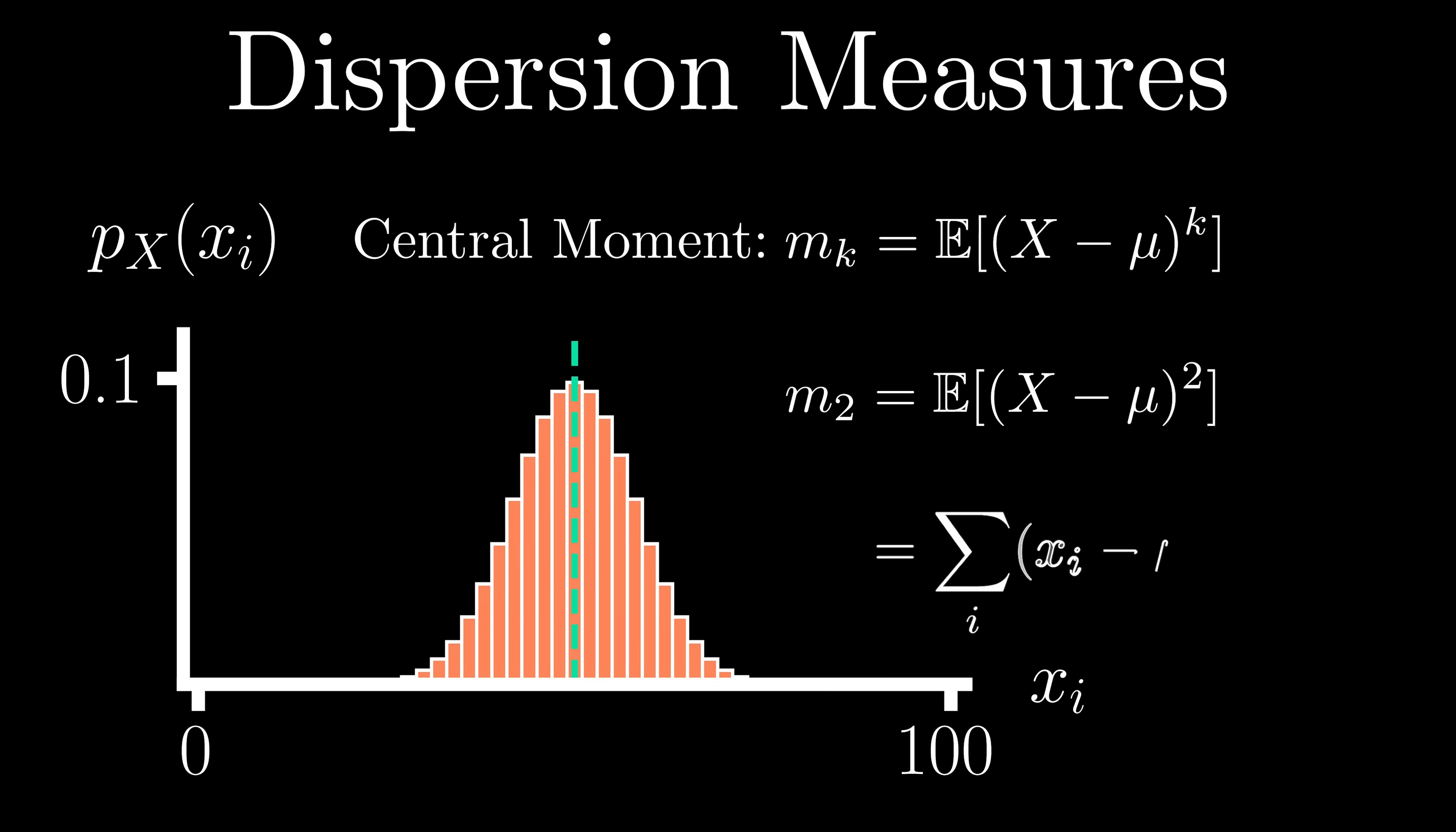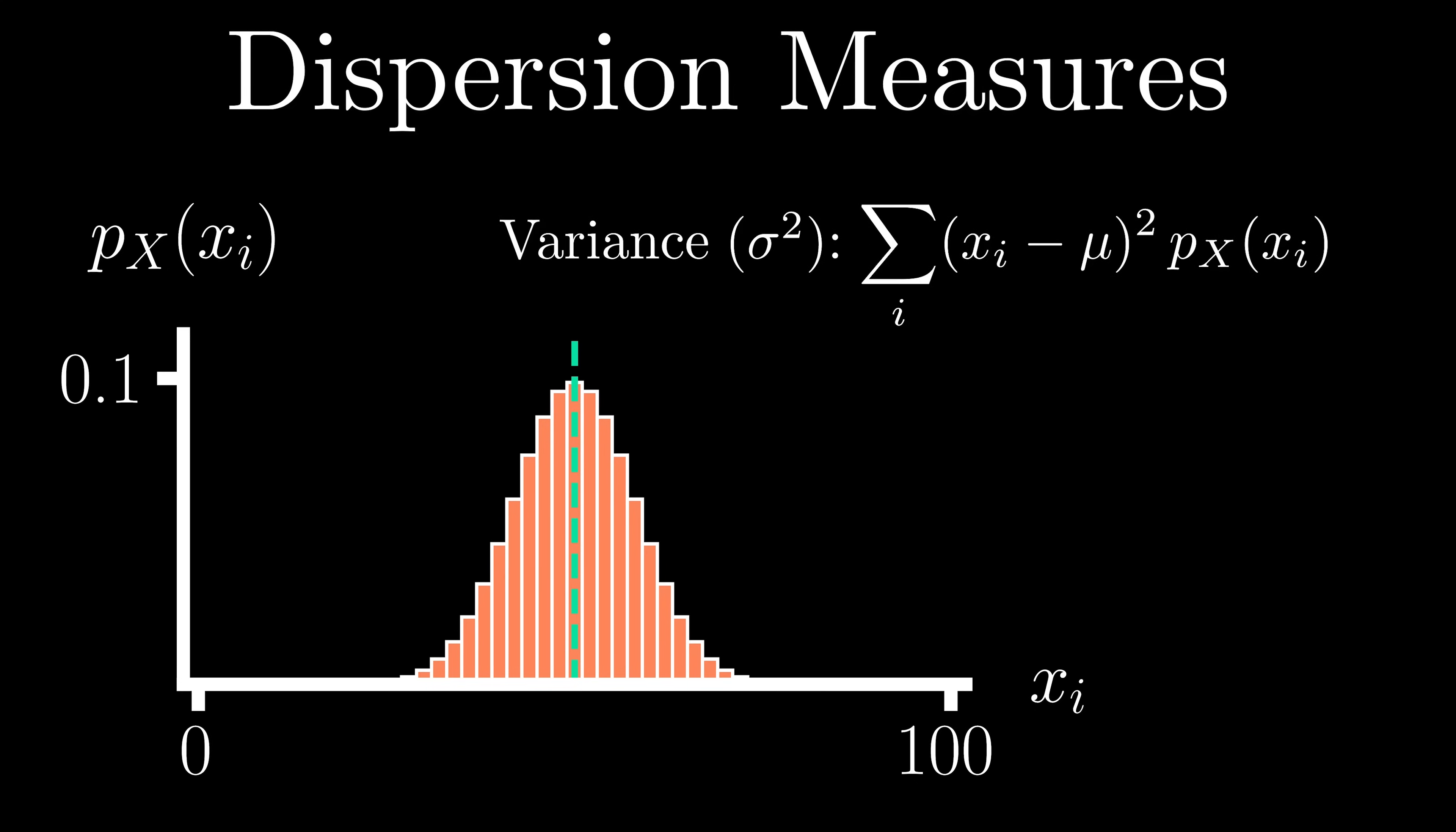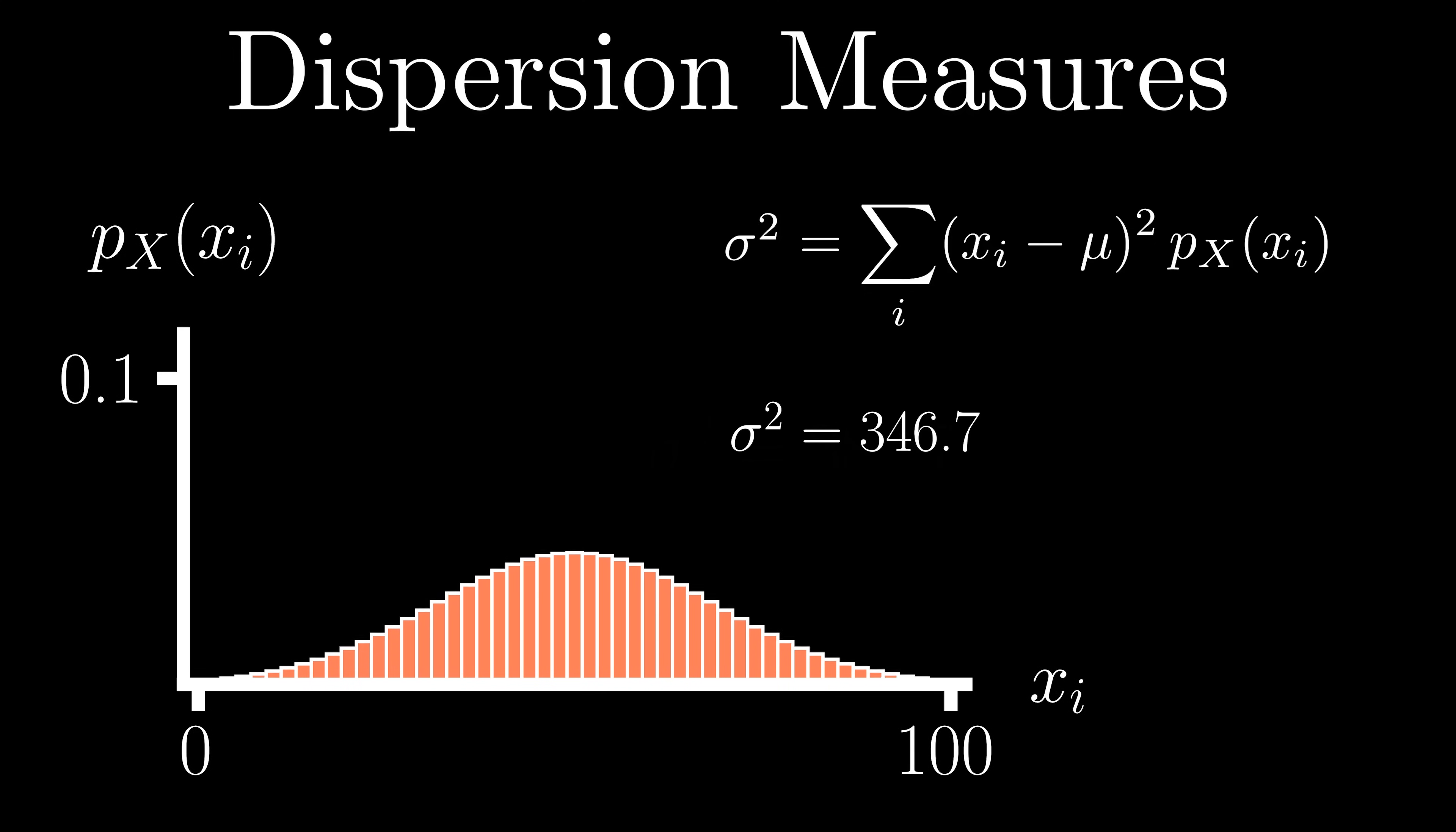The most famous central moment is the second central moment, which is otherwise known as the variance of a random variable, which we denote as sigma squared. If moments are new to you, here again, we are computing a weighted average based on our probabilities, but now according to the amount each outcome deviates from its mean squared. As each deviation is squared, our variance must be positive, and as the dispersion in our distribution increases, so too does our computed variance.